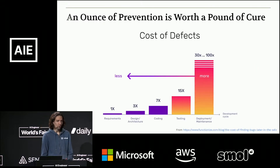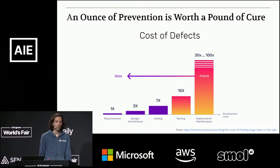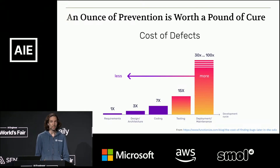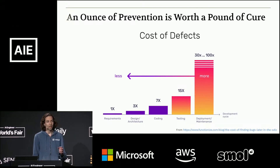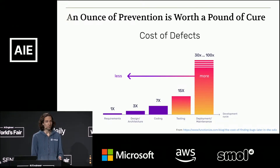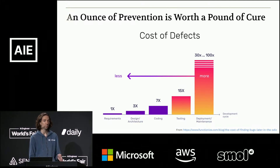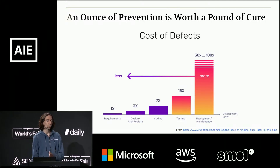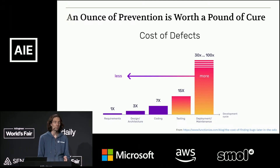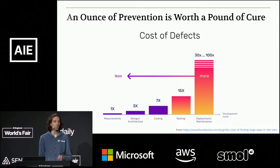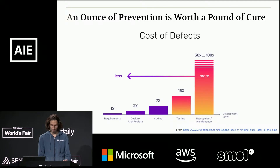If we think about the software development process, what you want to be doing is identifying these problems as early as possible. Sculptor does not work as a pull request review tool, because that's much later in the process. Rather, we want something that's synchronous and immediate — giving you feedback as soon as you've generated that code or changed that line. That's easier both for you and for the agent to fix.